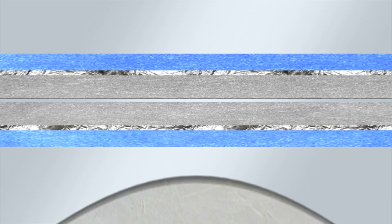Sonotrode and anvil are finely adjusted to a tolerance of microns and ensure precise compression. Due to the surface friction, energy is generated between the foils.